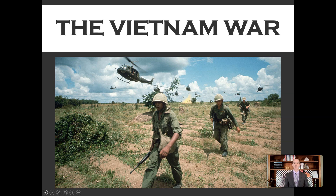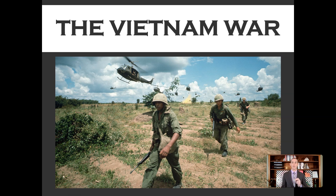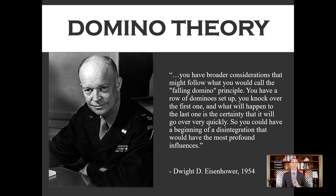During his administration, the United States will get involved in Vietnam — it will reach its crescendo, its highest point, and it will ruin his presidency. The United States got involved not for economic or strategic reasons, but for containment — to stop the spread of communism based on the domino theory. The idea was that if Vietnam falls to communism, the rest of the countries in the region would fall too.